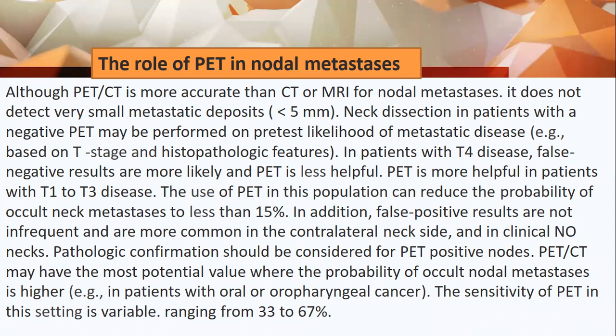PET is more helpful in patients with T1 to T3 disease. Its use can reduce the probability of occult neck metastasis to less than 15 percent. False-positive results are not infrequent and are more common in the contralateral neck and in a clinically N0 neck. Pathological confirmation should be considered for PET-positive nodes. PET-CT may have the most potential value in patients with oral or oropharyngeal carcinoma, where the sensitivity ranges from 33 to 67 percent.